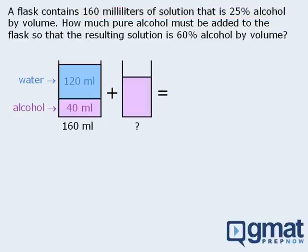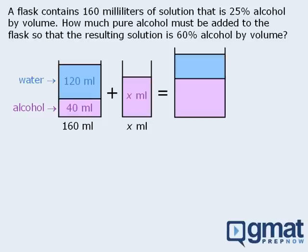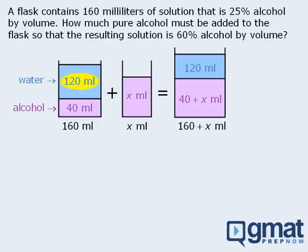To the solution, we want to add a certain amount of pure alcohol so that the new mixture is 60% alcohol by volume. Since we do not yet know how much alcohol needs to be added, let's say that we are adding x mL of alcohol. When we add these two solutions together, we get a new solution, which we will draw with the alcohol and water separated. To combine like parts: since we are combining 160 mL of the original solution and x mL of alcohol, the new solution must have a volume of 160 plus x mL. Since the original solution contains 40 mL of alcohol and the other solution contains x mL of alcohol, the new solution must have a total of 40 plus x mL of alcohol. Since the original solution contains 120 mL of water and the other solution contains no water, the new solution must contain 120 mL of water.